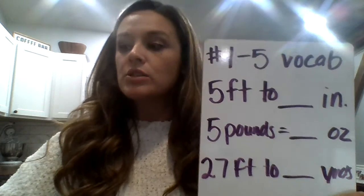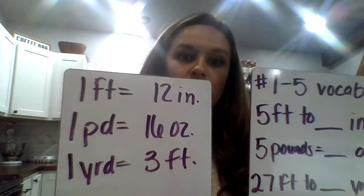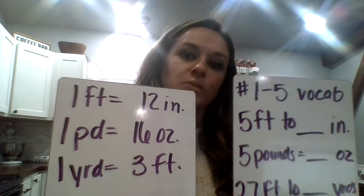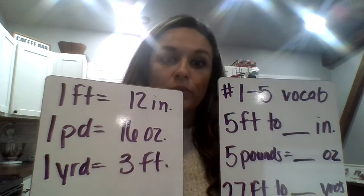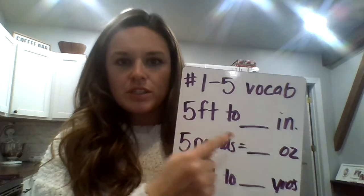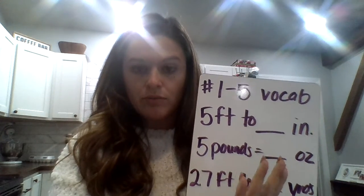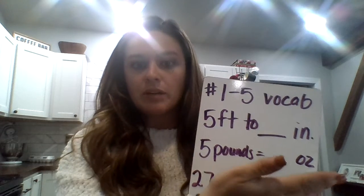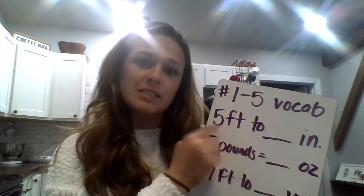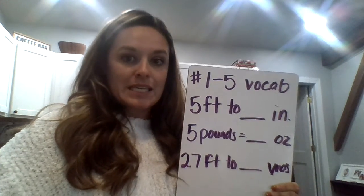First, you need to know conversions. One foot equals 12 inches, or 12 inches equals one foot. So if one foot equals 12 inches, how many inches is five feet? One to 12 — now we're getting five to something. That means we need to multiply by 12. So five times 12 would be 60 inches.